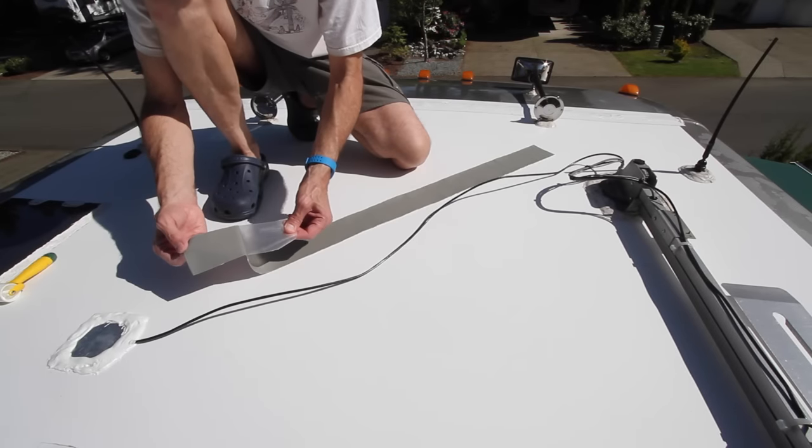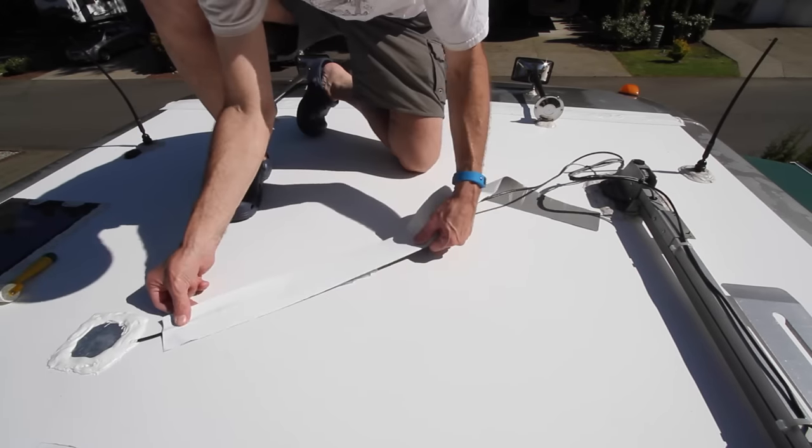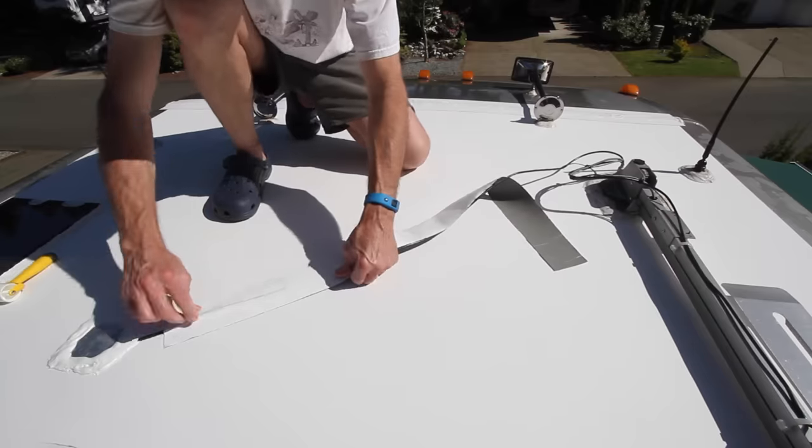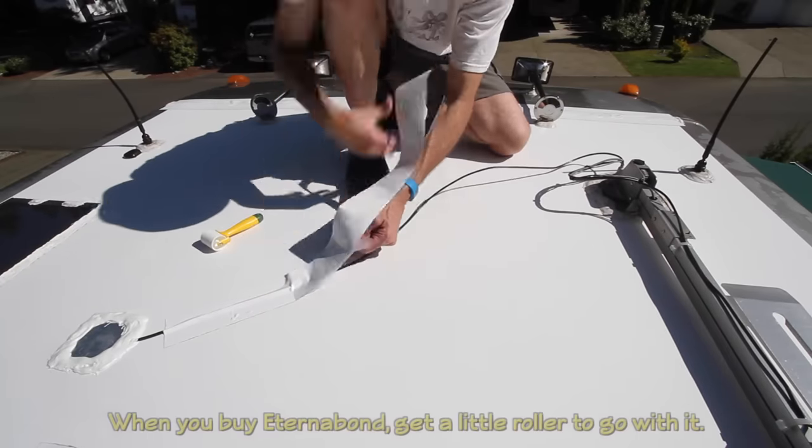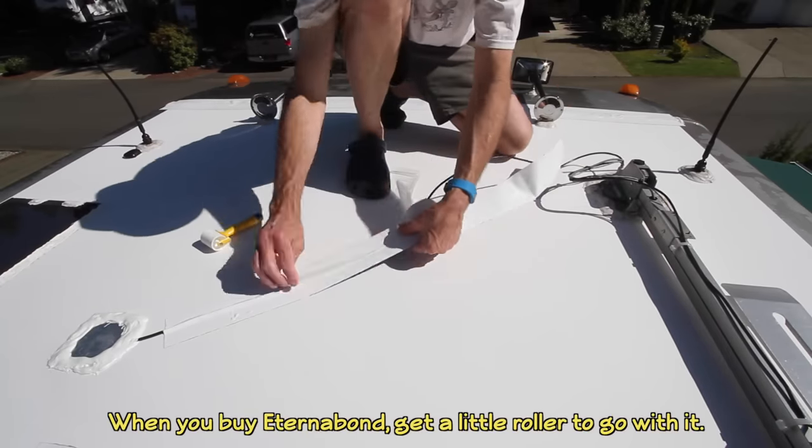Remove the backing a little at a time, positioning the center of the tape over the cable as you go. Once the tape is in place, roll it down to permanently seal it to the roof.